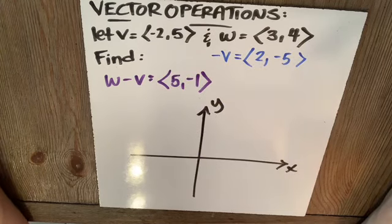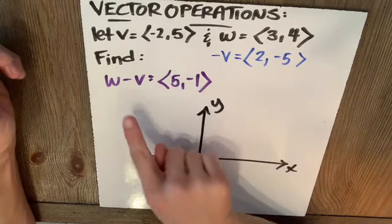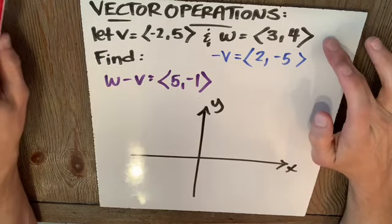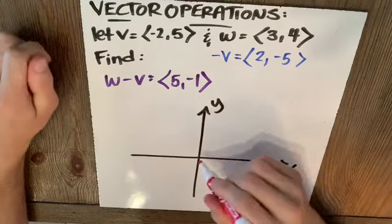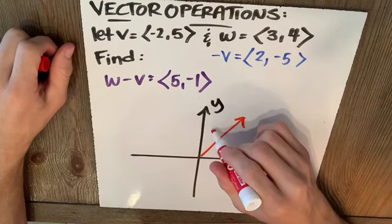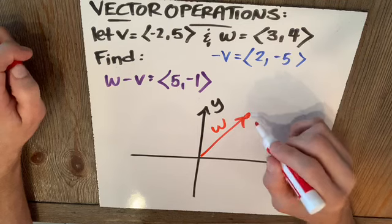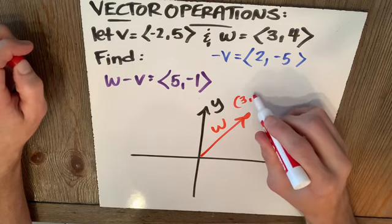So what does this look like geometrically? I know W minus V. I just found out it's 5, negative 1. Here is vector W. Let's put it in red. Over 3, up 4. So here is vector W. Notice I put it in standard position. And that point there is going to be 3, 4.